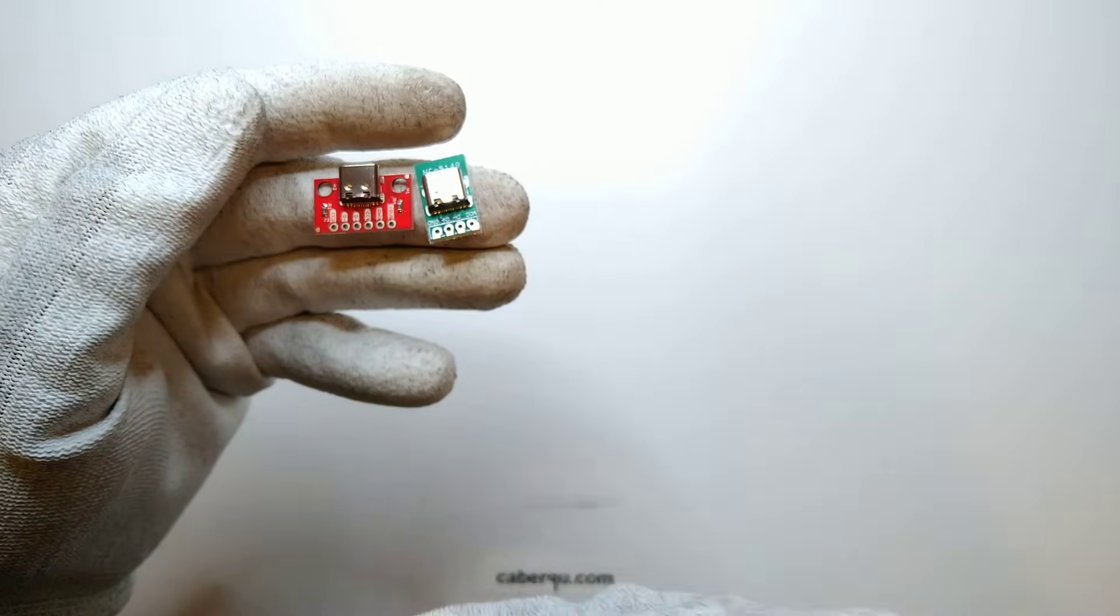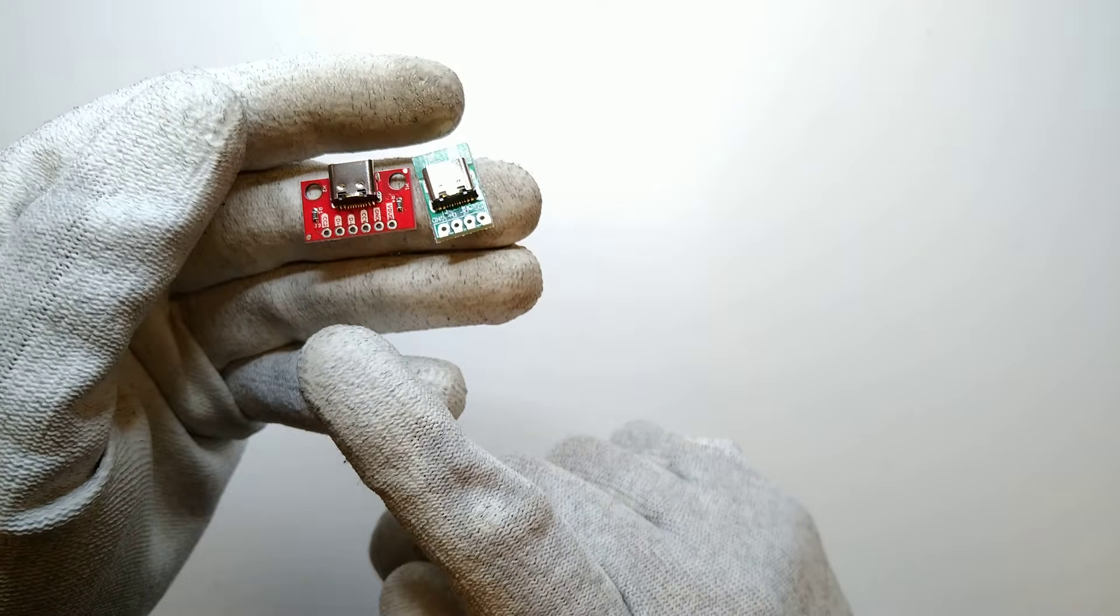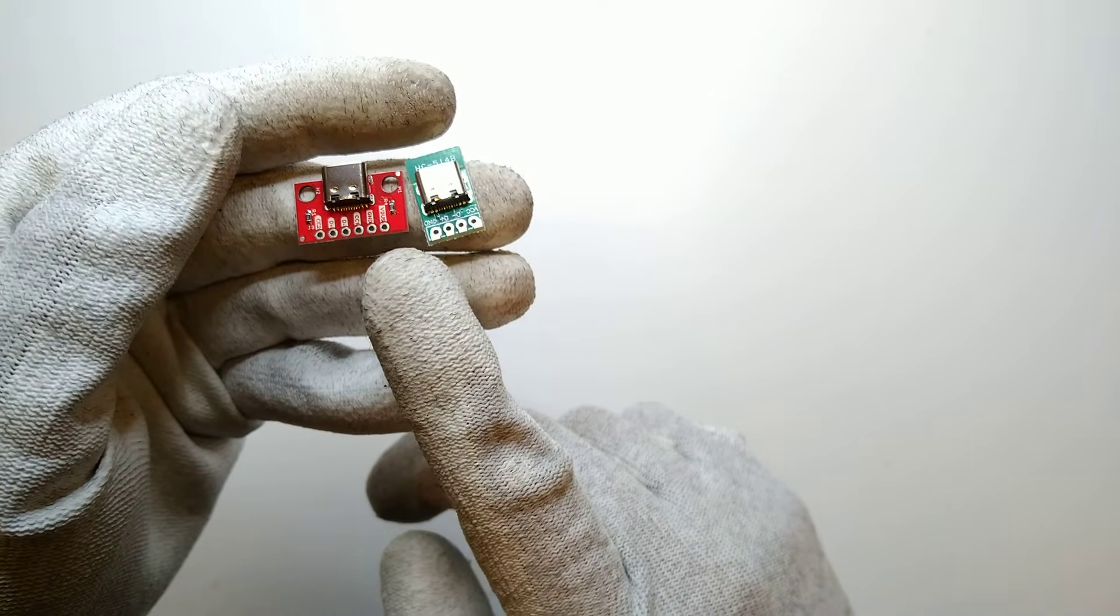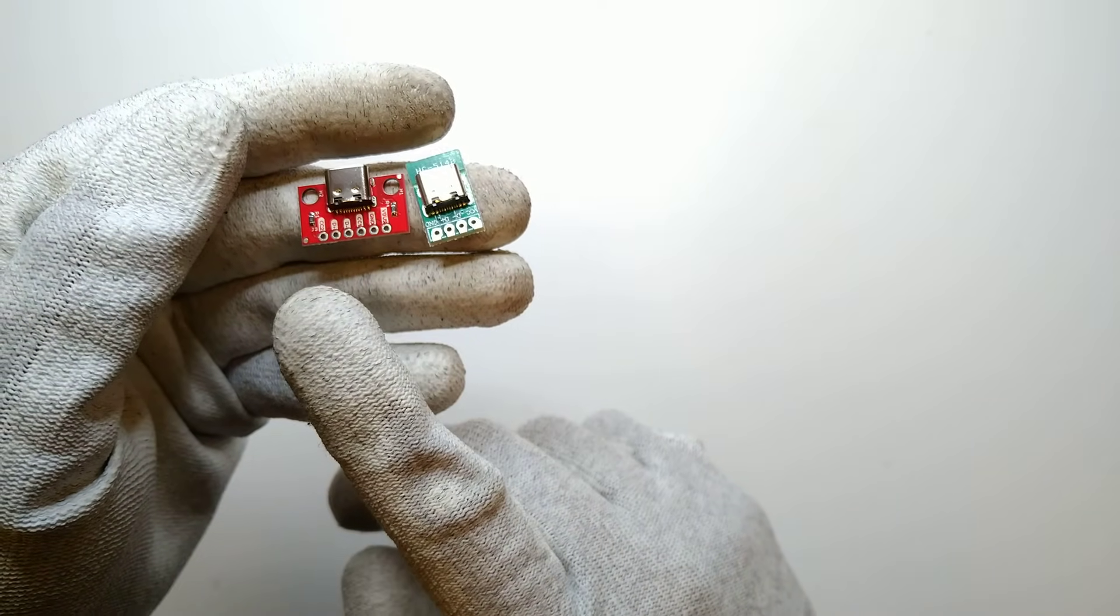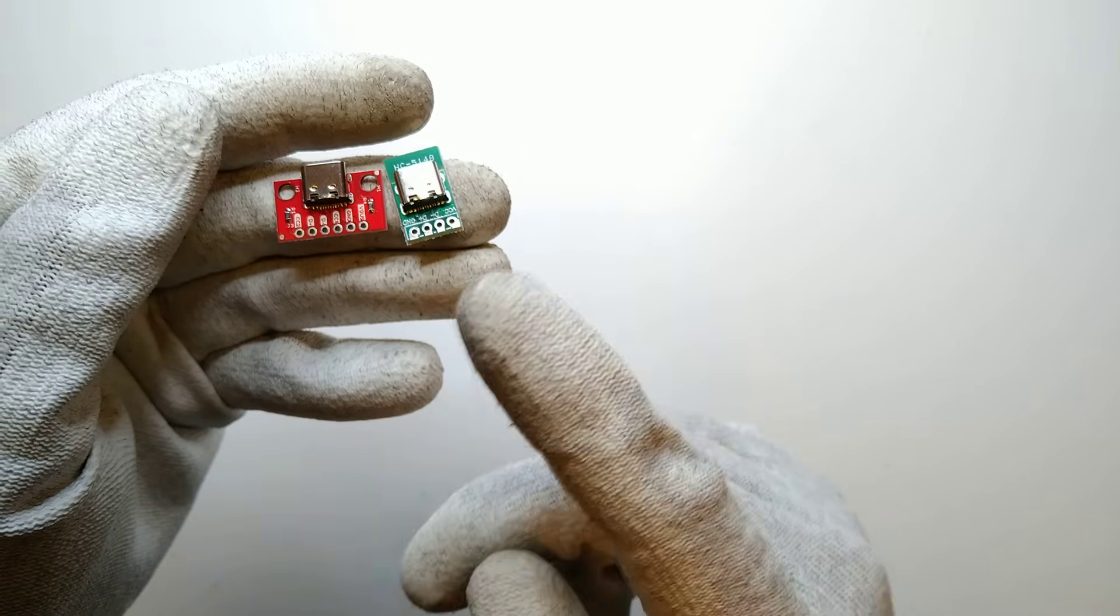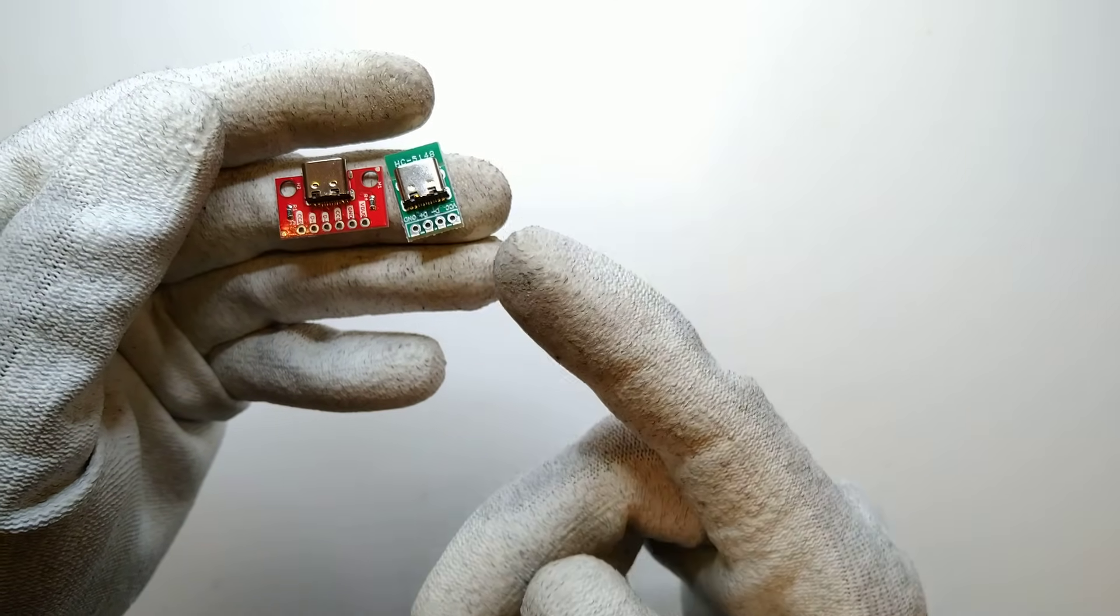And a device that can supply power needs to have pulled up resistors. That's the easiest way, so there are also more complicated ways where you have power delivery negotiations. But as you can see, this board actually implements those two pull down resistors and this board does not, and it does not break out the CC pins for you so you cannot hook them up yourself.